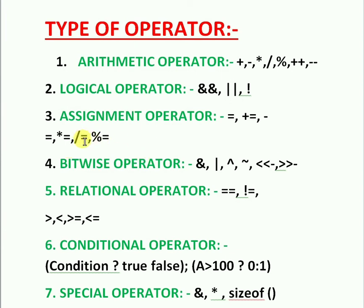Divide-equal-to (/=) is called division assignment — it stores the division result of both operands to the left-side operand. Modulus-equal-to (%=) is remainder assignment — it stores the remainder of both operands to the left-side operand.